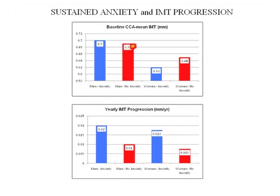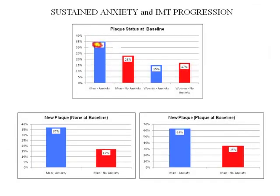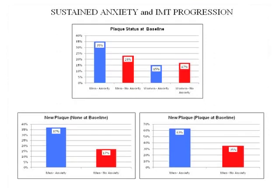They define sustained anxiety as individuals in the top 10% on the anxiety score at baseline and at two years. You repeat the IMT at four years and correlate four-year change in IMT with anxiety status. Looking at baseline IMT, men with versus without anxiety show no difference; no real difference in women either. But looking at yearly progression: anxious men progressed at 20 points per year versus non-anxious men at 10 points per year. Women with anxiety progressed twice as rapidly as women without anxiety.